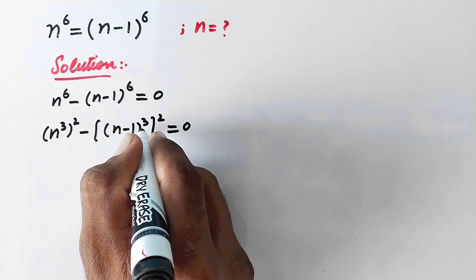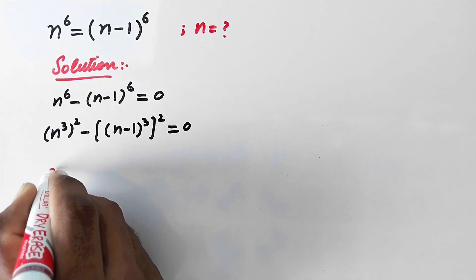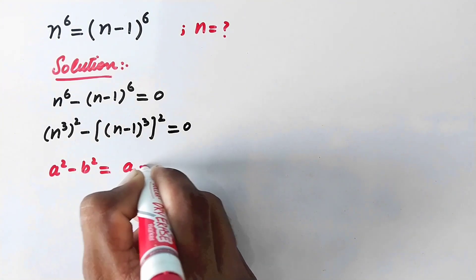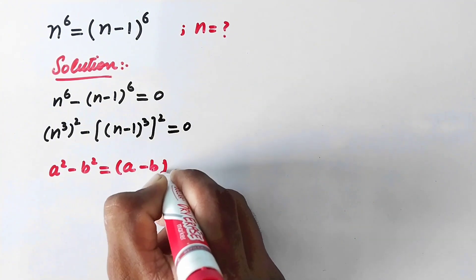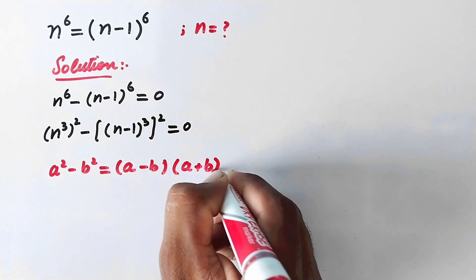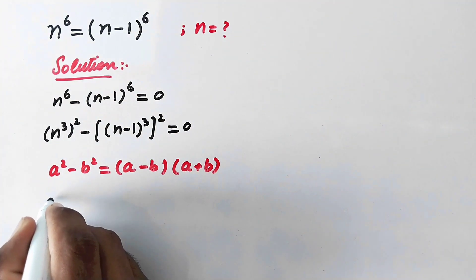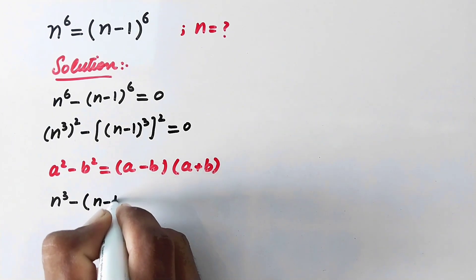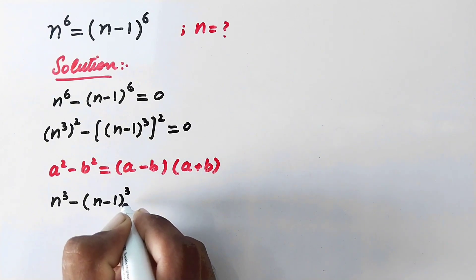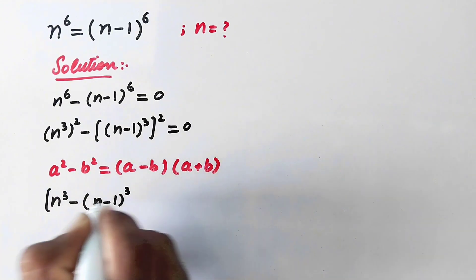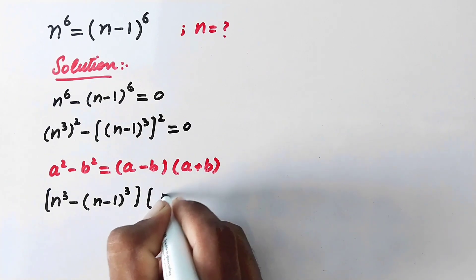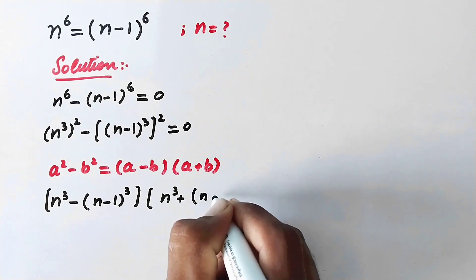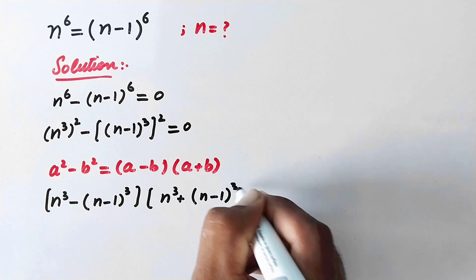Now we can use an algebraic formula. As we know that a squared minus b squared is equal to a minus b times a plus b. So here we will write n to the power 3 minus n minus 1 to the power 3, times n to the power 3 plus n minus 1 to the power 3.